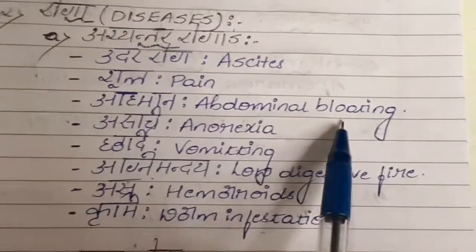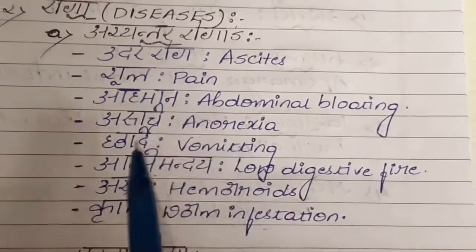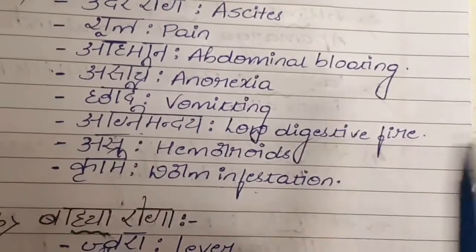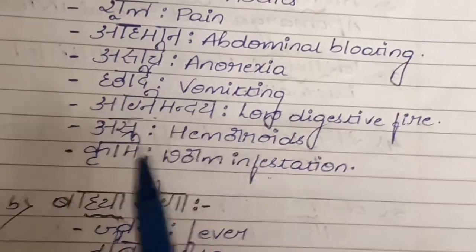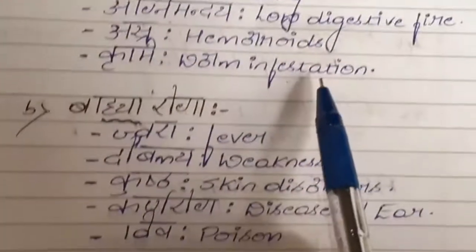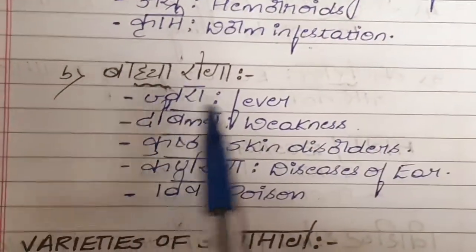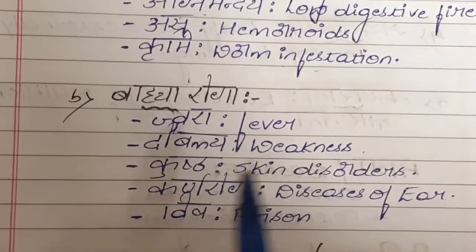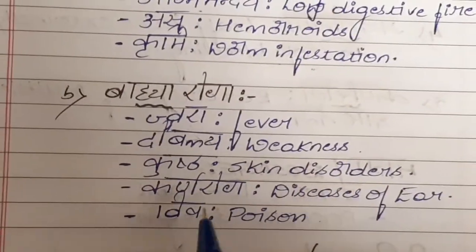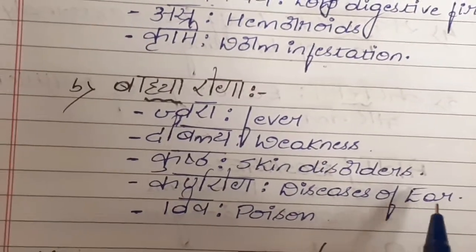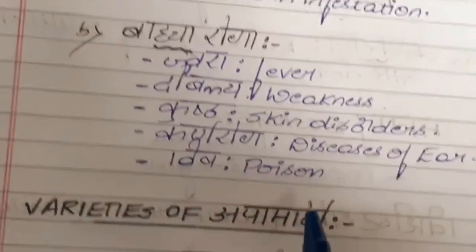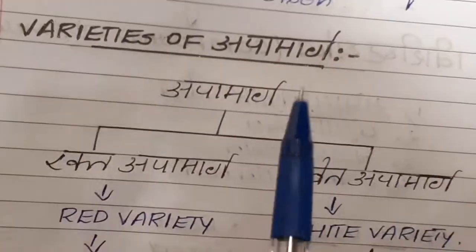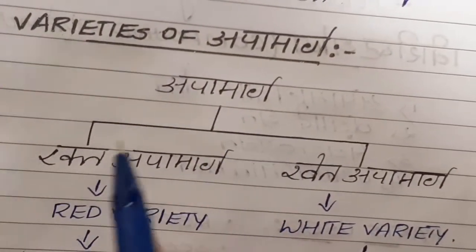Coming to Rogas — it treats both Abhyantara and Bahya rogas. Abhyantara rogas include: Udara roga (ascites), Shula (pain), Adhmana (abdominal bloating), Aruchi (anorexia), Chardi (vomiting), Agnimandha (low digestive fire), Arsha (hemorrhoids), Krimi (worm infestation), and many more diseases.